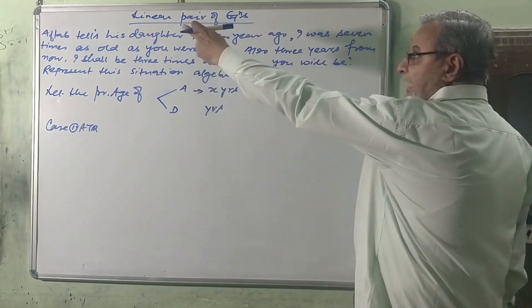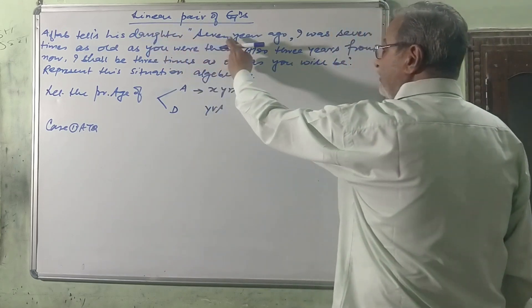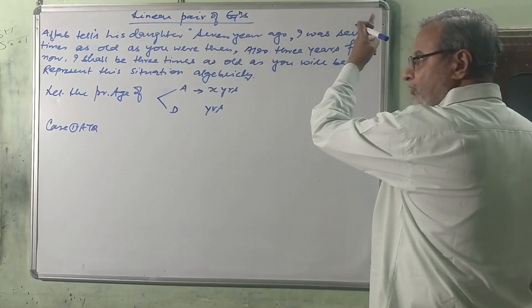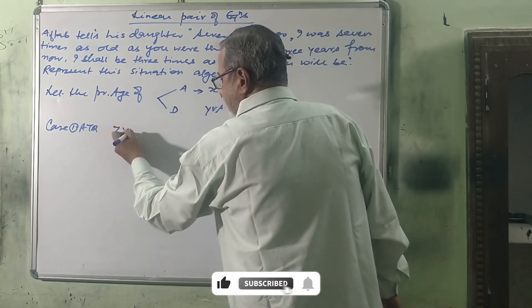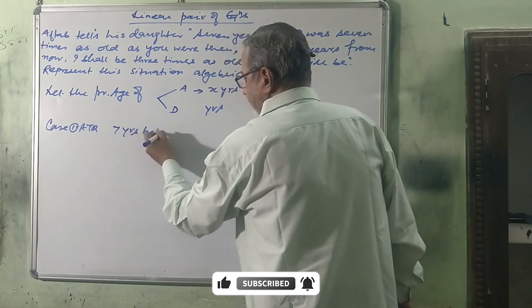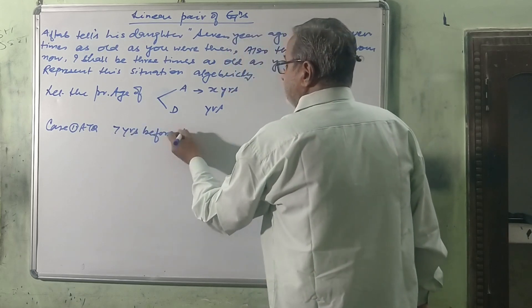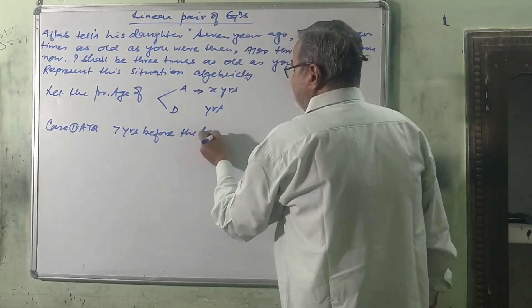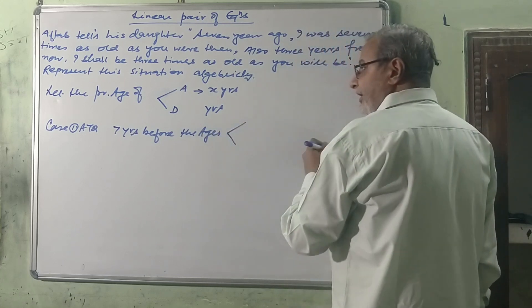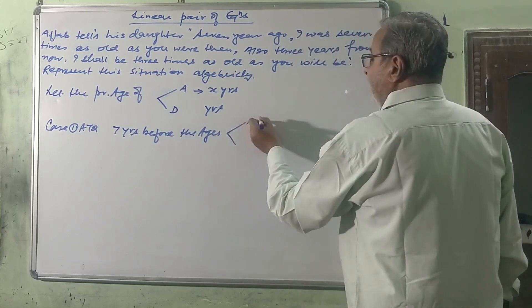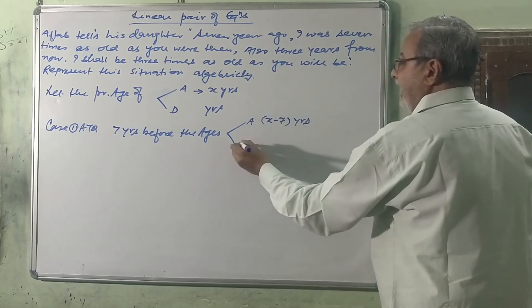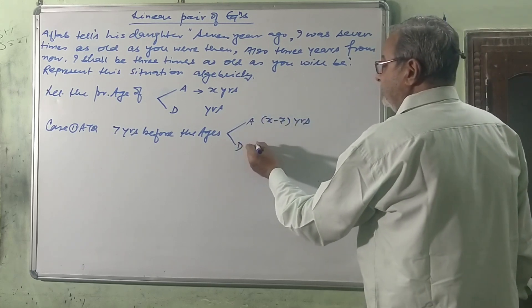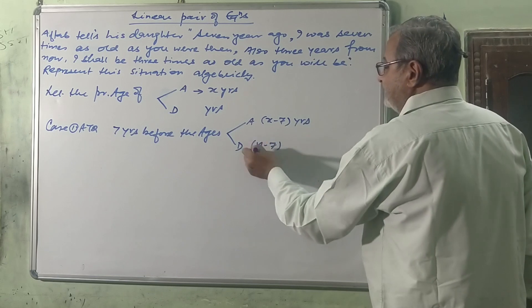Case one, according to question: the father tells his daughter seven years ago. Seven years before, the ages will be: father is x minus 7 years and his daughter will be y minus 7 years.